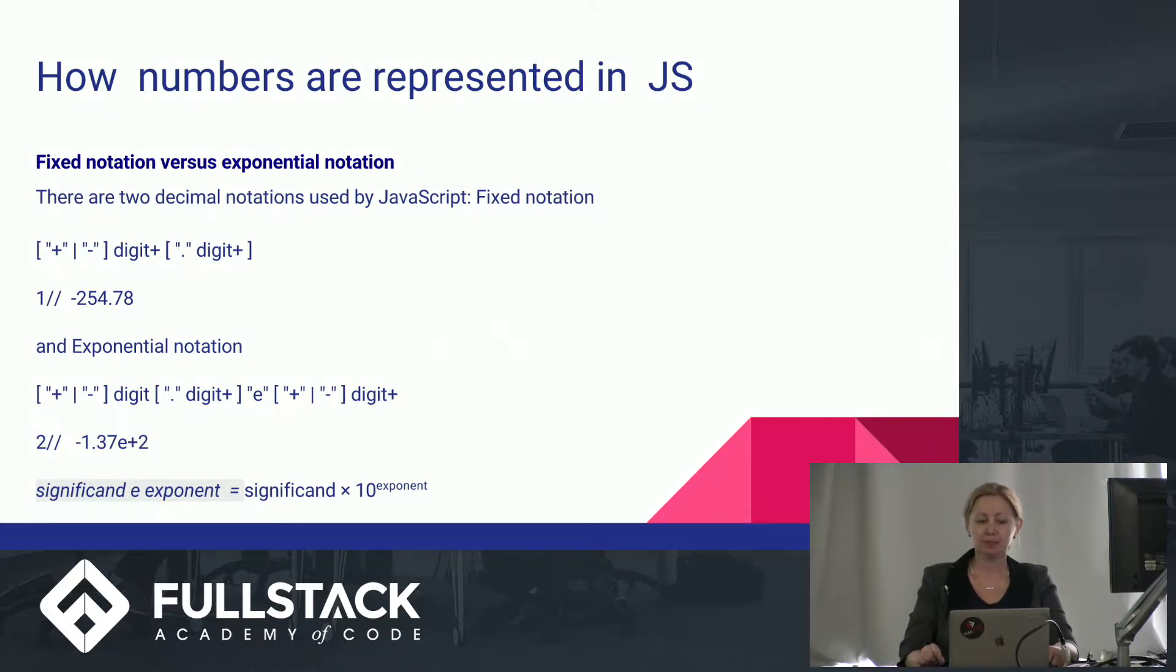We know that in JavaScript numbers are internally stored in binary floating point, but they are usually displayed in the decimal system. So there are two decimal notations used by JavaScript: Fixed or regular notation, like on line one, and exponential notation, like on line two.